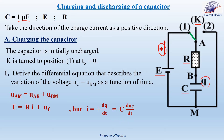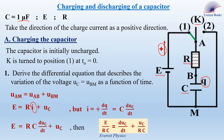Then dQ by dt equals C times dUC by dt. Now replace I in this equation by C dUC by dt, so E becomes RC dUC by dt plus UC. Now divide by RC both sides, so E over RC equals dUC by dt plus UC over RC.